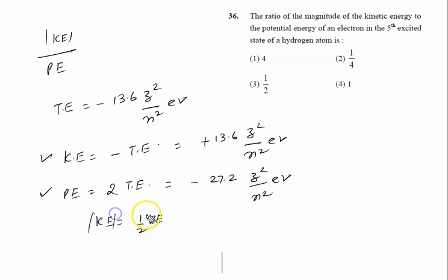So we can write magnitude-wise half of potential energy. The ratio of kinetic energy to potential energy is given by 1 by 2. From these equations directly we can write the right answer to this problem is option 3, that is 1 by 2.